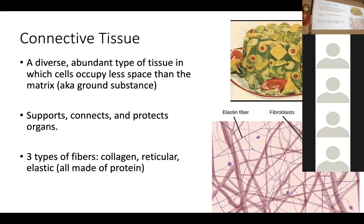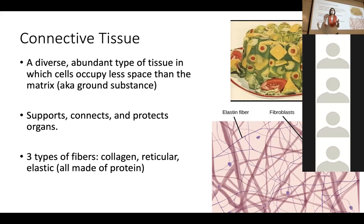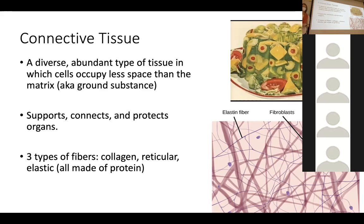I want you to know the names of the three fiber types — collagen, reticular, and elastic — and know they're all protein fibers running through the matrix. These little cells have tons of fibers running in between them, which helps with the connection and support function of connective tissue. On the microscope image, you can see all of these fibers running through the connective tissue.